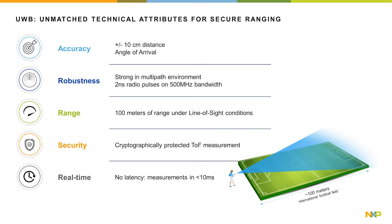Let's now look at a summary of the attributes of UWB that make it an unmatched technology for secure ranging. It is accurate — it can accurately determine the distance between devices, but can also calculate the angle from which a signal is arriving. It's robust, with strong multi-path environment performance that ensures position accuracy. It has a long range, with up to 100 meters in line-of-sight conditions.